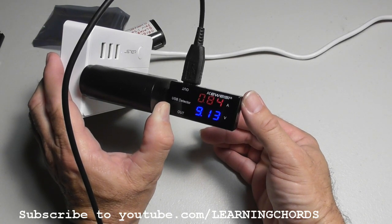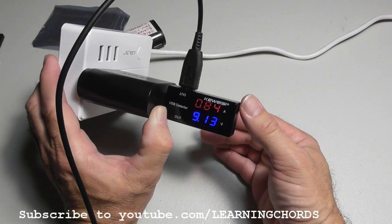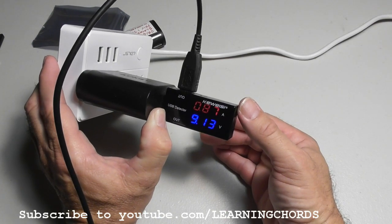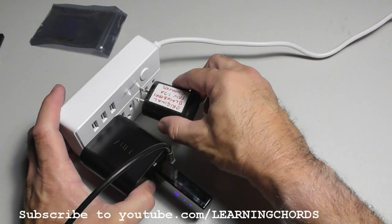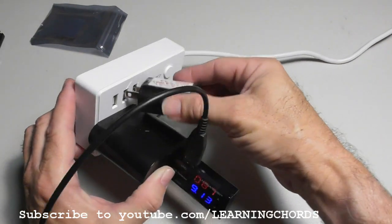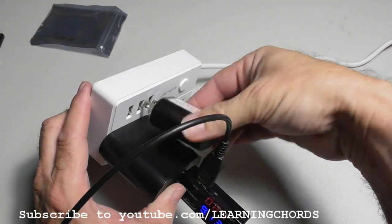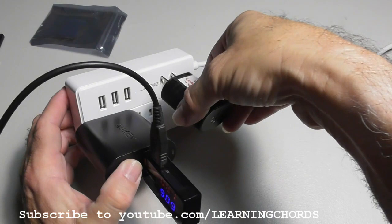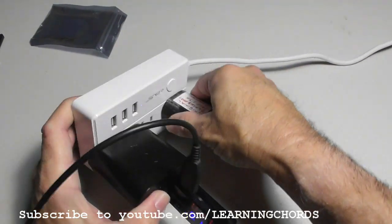So we're charging at less than one amp, 9.3 volts now. And what I'm going to do is I'm going to plug in an original Blackberry charger, the 1.3 amp, and this thing should go way way down.